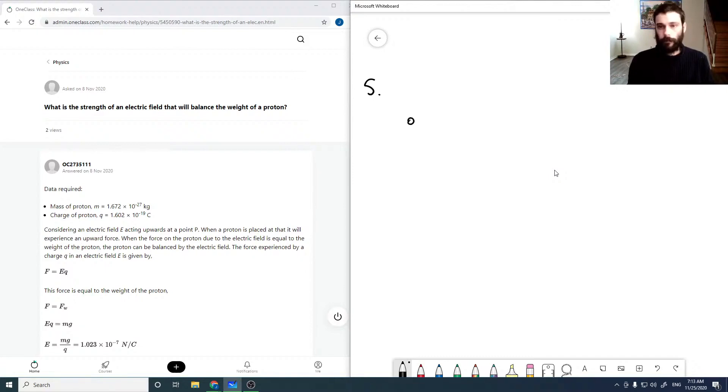If we have a proton experiencing mg, the force due to gravity, then what we want is for our electric field, our force due to our electric field which is QE, to point in the opposite direction which is going to balance our gravitational force.